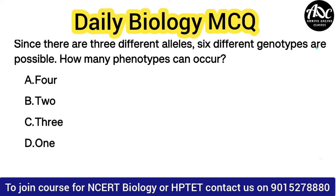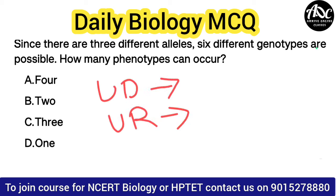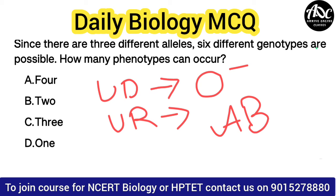Blood group O is called the universal donor blood group. Which is the universal recipient blood group? We commonly say O negative is the universal donor, and AB positive is the universal recipient.